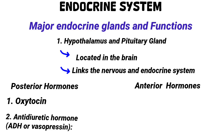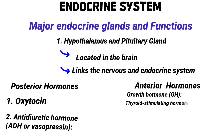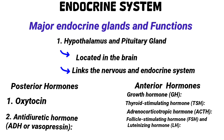The anterior pituitary hormones include growth hormone, which stimulates tissue growth, cell division, and fat metabolism. We also have thyroid stimulating hormone, TSH, which stimulates the thyroid gland to produce thyroid hormones. Then we have adrenocorticotropic hormone, also called ACTH, which stimulates the adrenal cortex to release corticosteroids. Next is follicle stimulating hormone and luteinizing hormone, FSH and LH respectively, which regulate the gonads — the ovaries and the testes. Finally, prolactin, also called PRL, stimulates milk production in females.